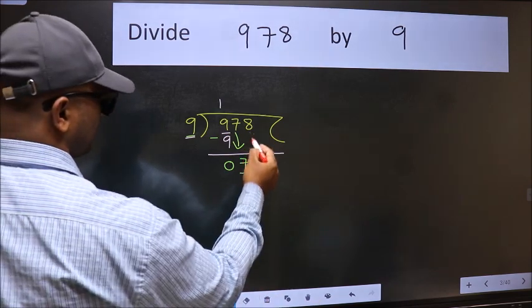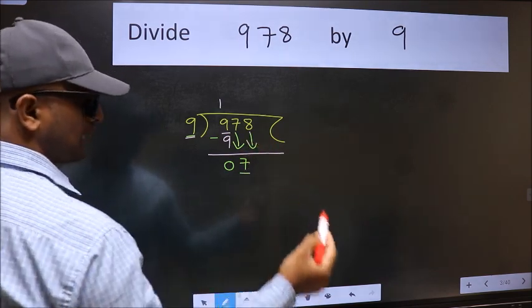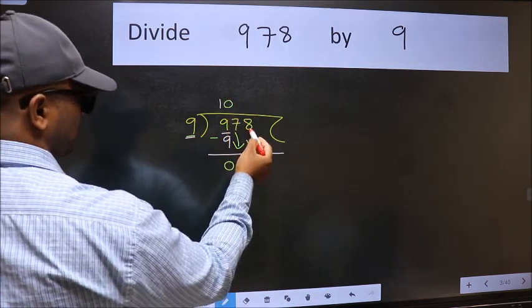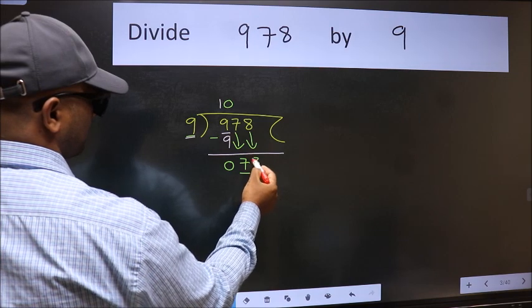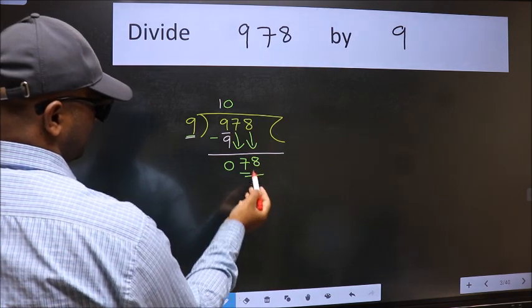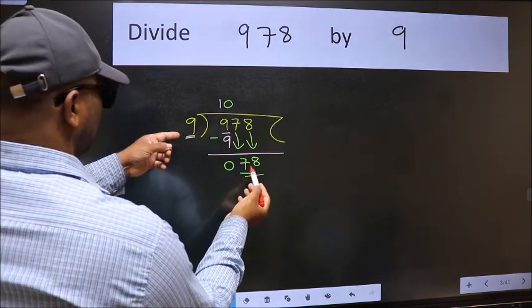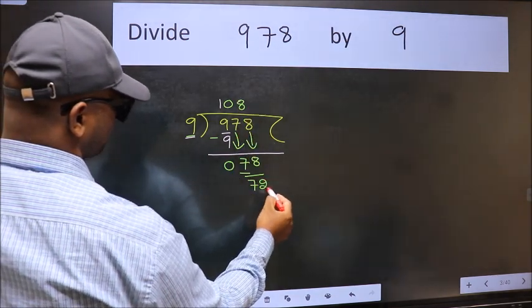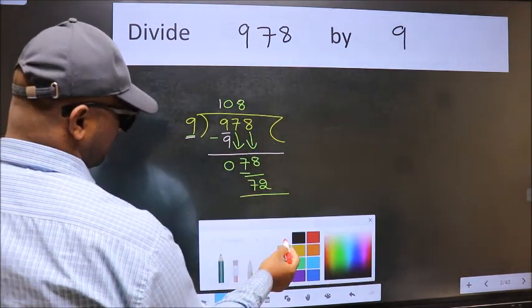And the rule to bring down second number is we should put 0 here, then only we can bring this number down. Now 78, a number close to 78 in 9 table is 9×8=72. Now we should subtract.